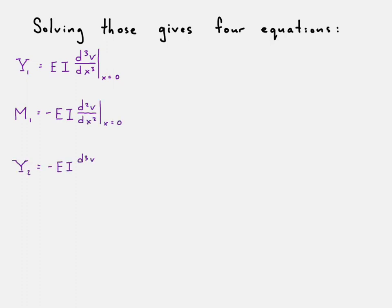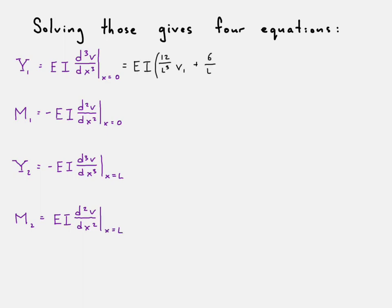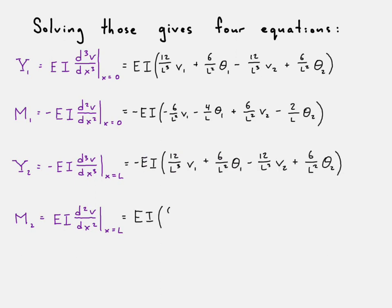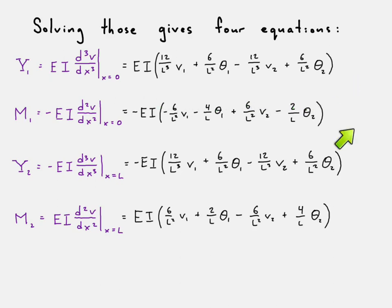Writing these out in more detail: here we have those first four terms, and here we have the next four terms. When you look at each of these terms, we can almost draw our stiffness matrix right here — we're going to have EI out in front. This is the first term, second term — this would be like the whole first row, with v1, theta1, v2, theta2. This whole portion ends up becoming our stiffness matrix.